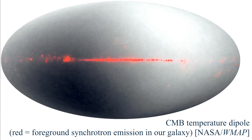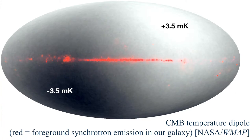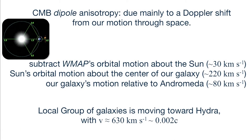Although the average temperature of the cosmic microwave background is 2.7255 Kelvin, on one half of the sky it's about 3.5 millikelvin hotter than average and the other half about 3.5 millikelvin cooler — giving a dipole anisotropy. This CMB dipole is due mainly to the Doppler shift from our motion through space. The WMAP and Planck satellites at the L2 Lagrangian point go around the Sun at about 30 kilometers per second; the Sun orbits the galaxy at about 220 to 240 kilometers per second; and our galaxy and Andromeda are falling towards each other at about 80 kilometers per second.